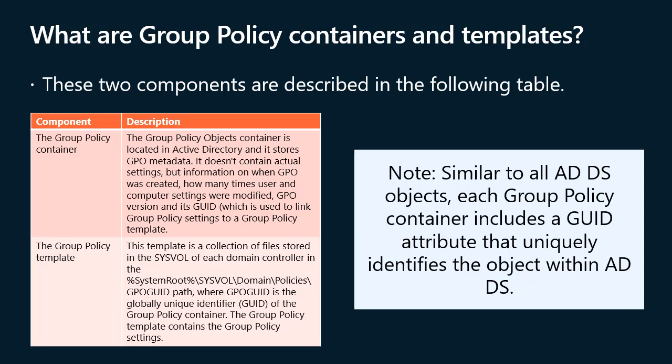When you change the settings of a GPO, the changes are saved to the SysVol share. By default, the domain controller that holds the PDC Emulator operations master role is used, and changes are then replicated to other domain controllers. By default, when group policy refresh occurs, the client-side extensions apply settings in a GPO only if the GPO has been updated. The group policy client can identify an updated GPO by its version number, which increments each time you make a change. The version number is stored as a group policy container attribute and in a text file, GPT.ini, in the group policy template folder. If the version number has changed, Windows Server will inform the client-side extensions that the GPO is updated and processing will occur.